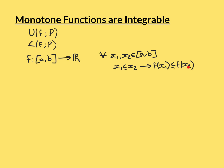Because X2 is further along in the domain than X1, the value it's mapped onto is going to be greater than or equal to the value that X1 is mapped onto. So F(X1) is less than or equal to F(X2). This is what it means for the function to be monotonically increasing.